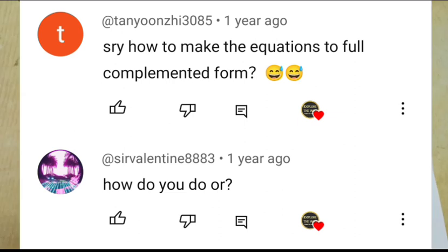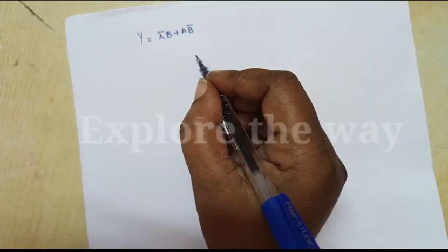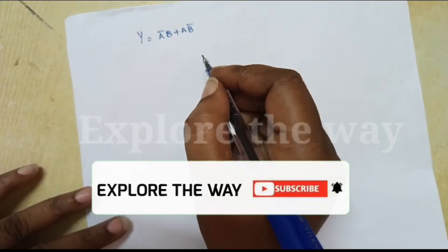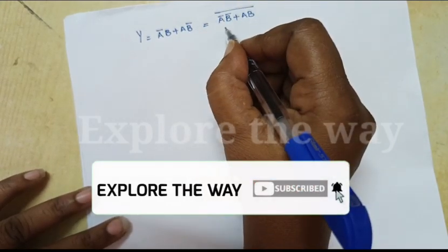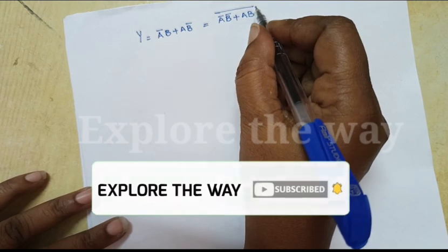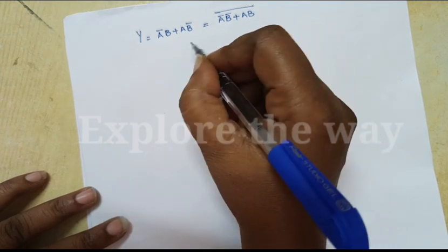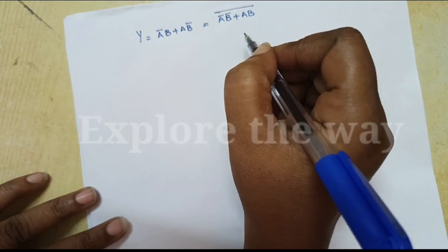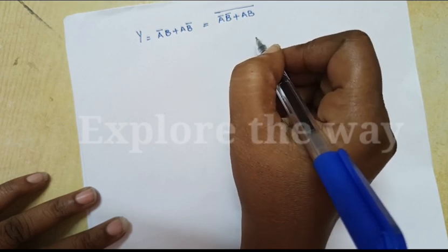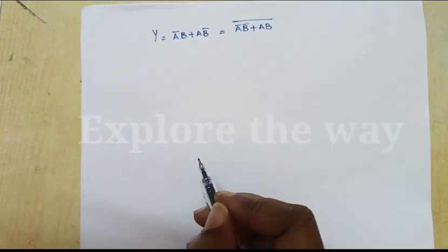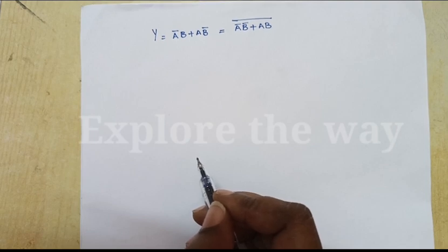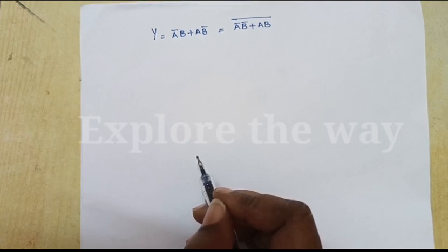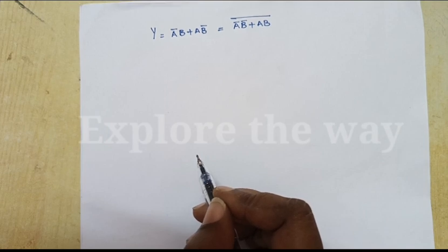Mainly, why the XOR gate output Y = A̅B + AB̅ is expressed as (A̅B + AB̅) whole bar. In my videos I expressed it like this, and some are thinking that this equation is wrong and the schematic diagram is also wrong.